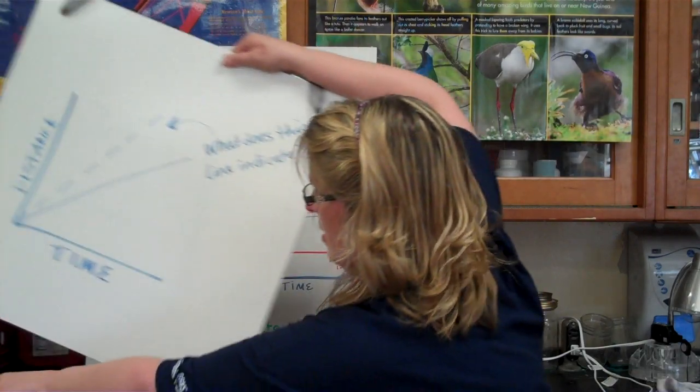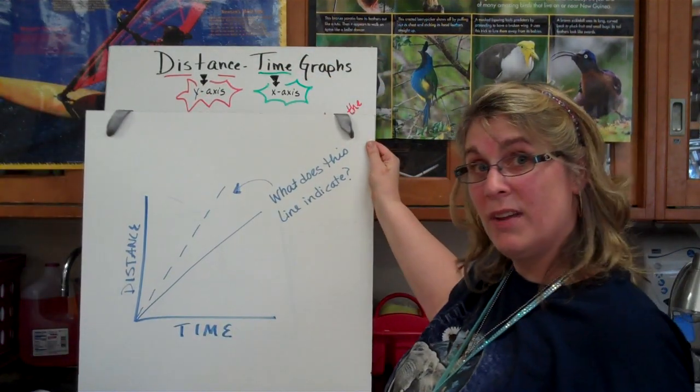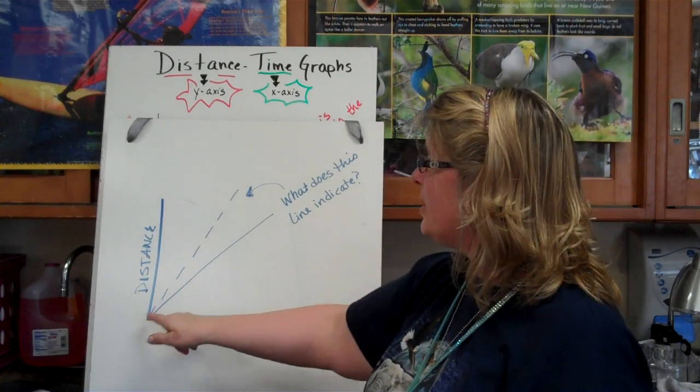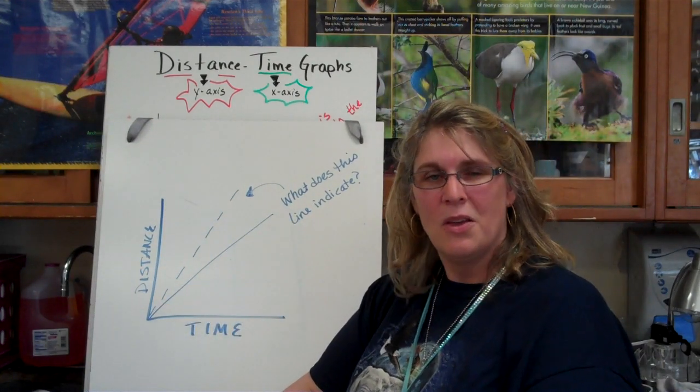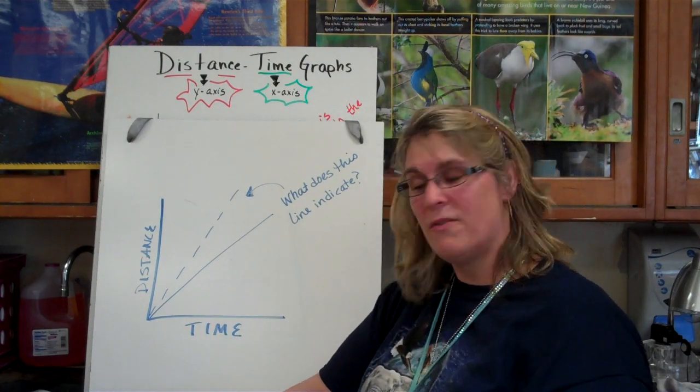Now, the first one, you've got the solid line that I told you what it meant on that previous board. But I want you to tell me what this dotted line indicates. What's your hypothesis? What do you think is happening there? So, that's the first one.